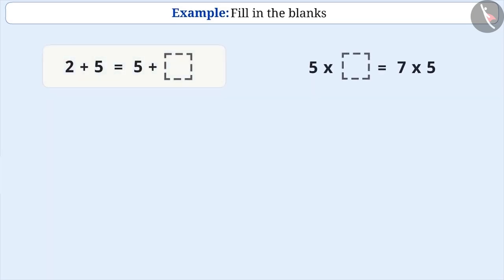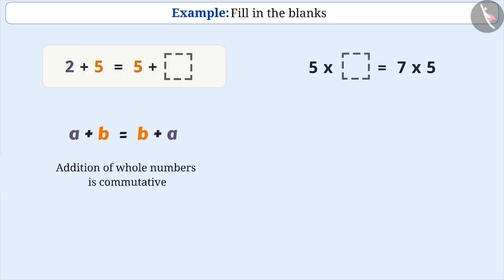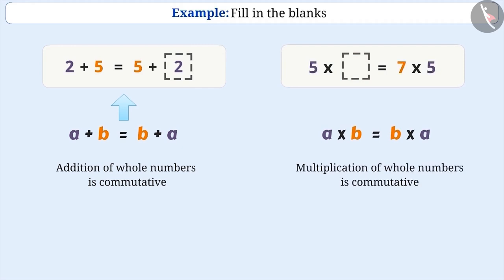Next example: fill in the blanks. Since addition of whole numbers is commutative, we will write two in the blank. Since multiplication of whole numbers is also commutative, we will write seven in the blank.